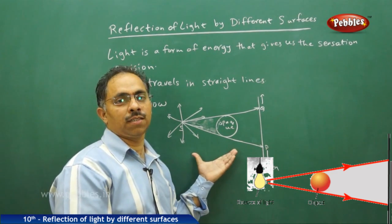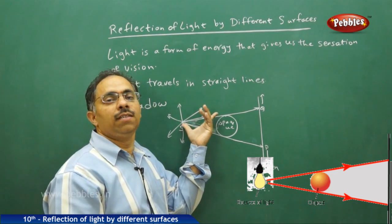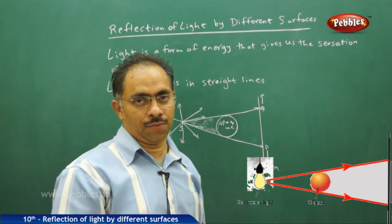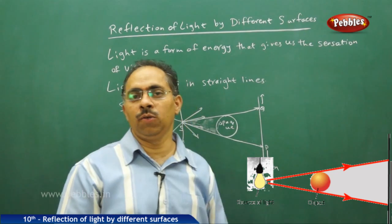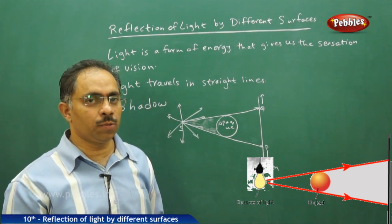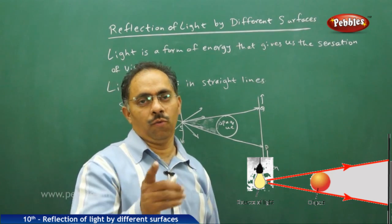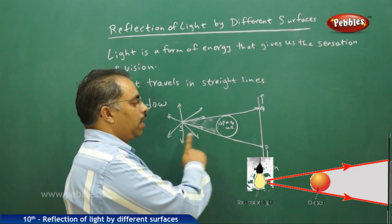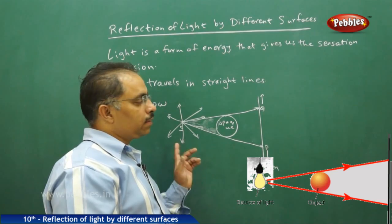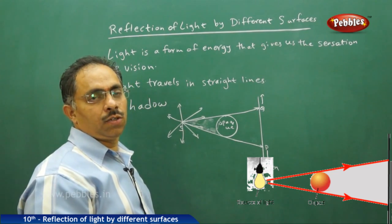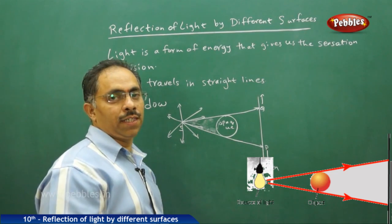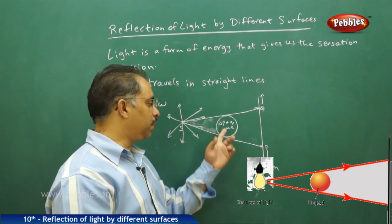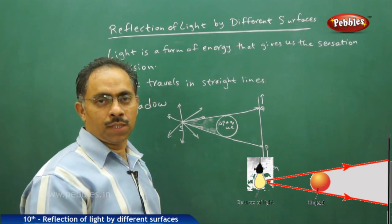It is because of the rectilinear propagation of light that shadows are formed, and this is the basic concept involved in eclipse formation — either solar eclipse or lunar eclipse. For a shadow to be formed, we need three things: one is the source of light, which can be a point source or an extended source; an opaque object; and a screen. These three are compulsory to observe a shadow.